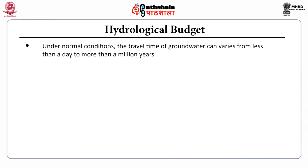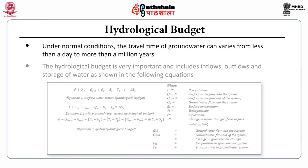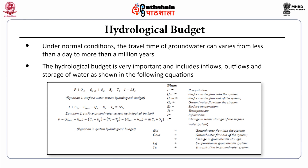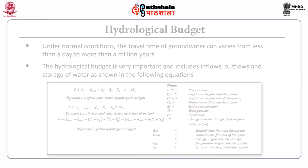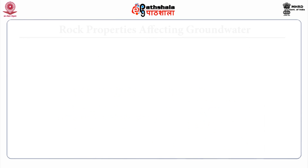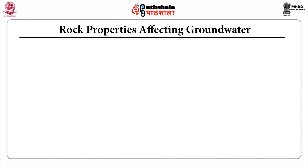Under normal conditions, the travel time of groundwater can vary from less than a day to more than a million years. The hydrological budget is very important and includes inflows, outflows, and storage of water as shown in the following equations.